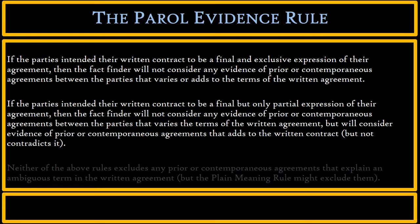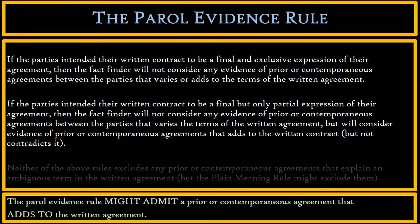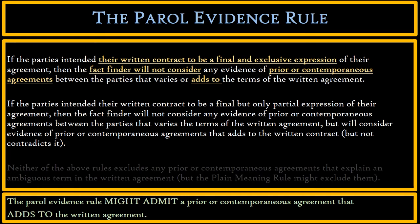The Parole Evidence Rule might admit a prior or contemporaneous agreement that adds to the written agreement. If the written agreement is final and exclusive, the fact finder will not consider any evidence of prior or contemporaneous agreements that adds to the terms of the written agreement. So if our written agreement is a final and exclusive expression of our agreement, then our prior or contemporaneous agreements are not admissible, even if they just add to the terms.